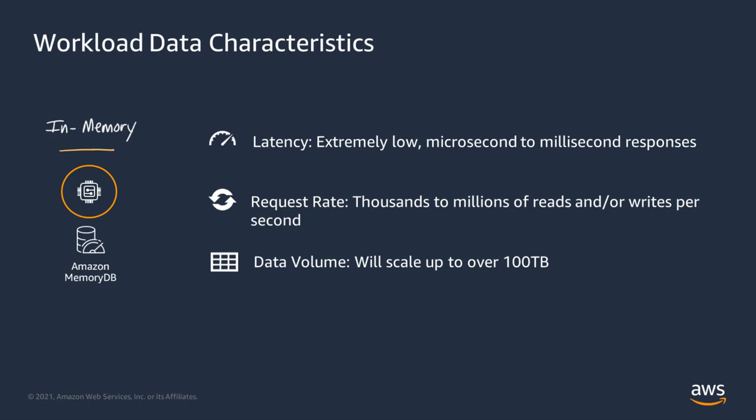Finally, data volume. Amazon MemoryDB for Redis can scale to up to 100 terabytes of in-memory data, but it doesn't have to go that high. We've seen clusters spun up with as few as 13 gigabytes of in-memory storage, with the elasticity to scale up or scale out in the future.